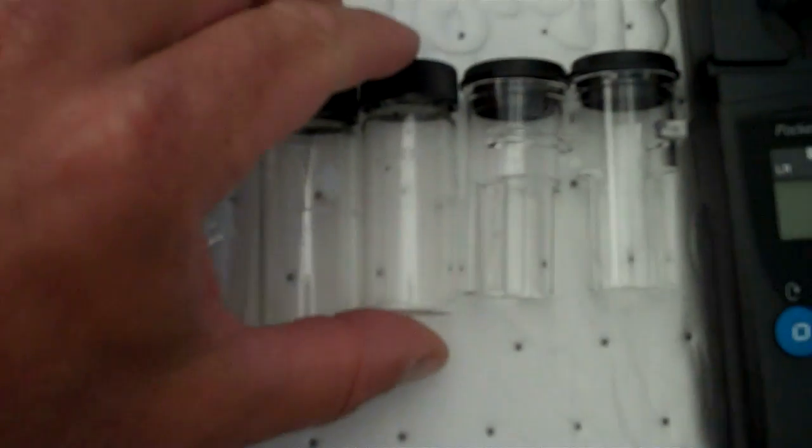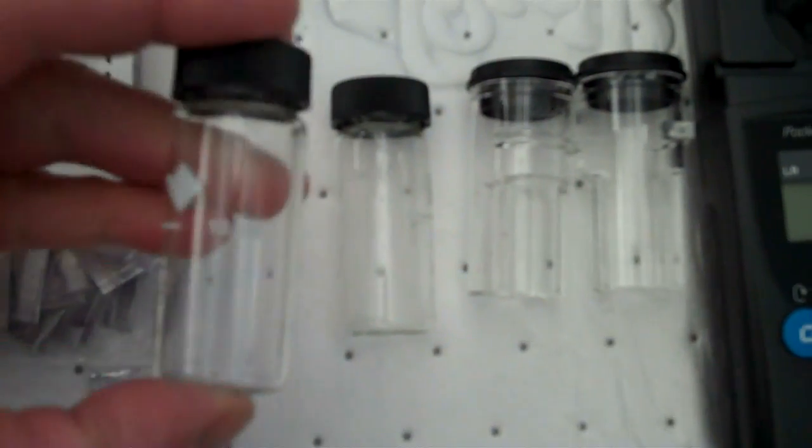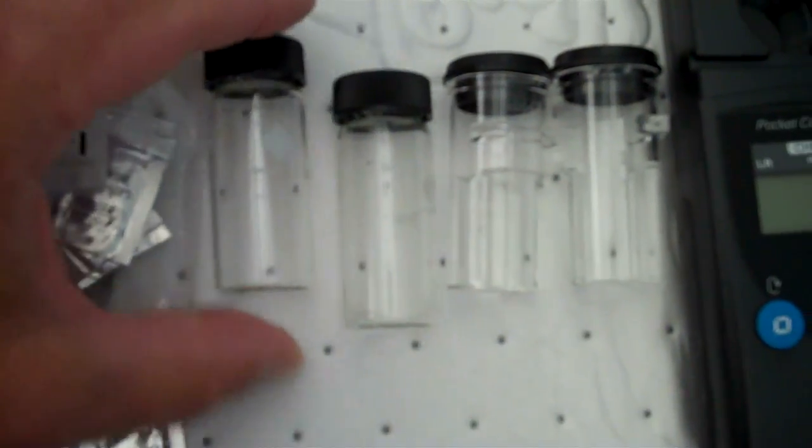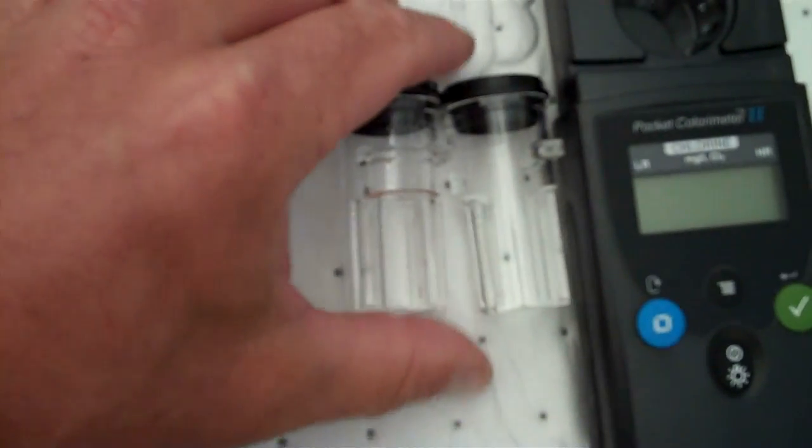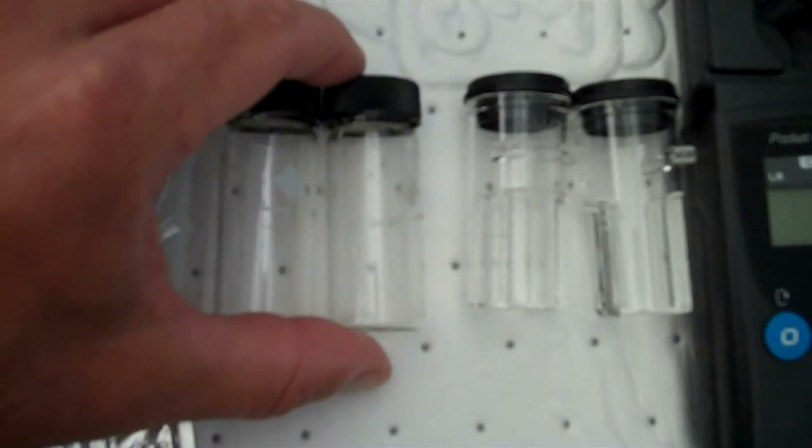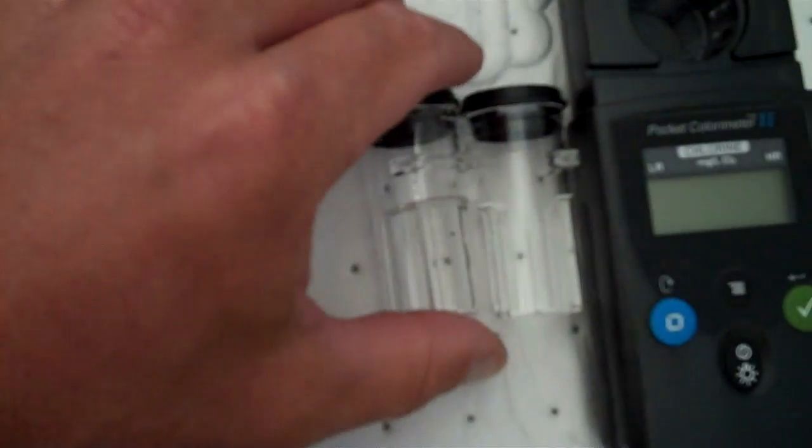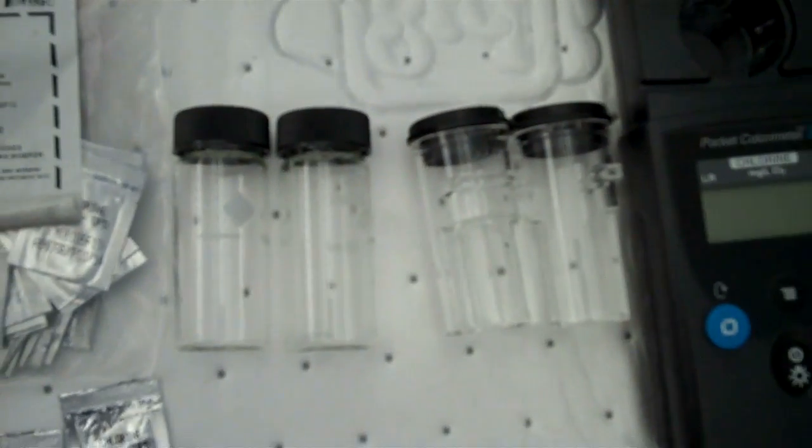These are the vials themselves. These two are made out of glass and have a little white diamond on them. The other two are made out of plastic. The two made out of glass are used for the low chlorine range, and the two made out of plastic are used for the high chlorine range.